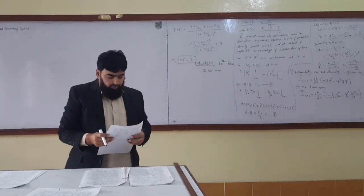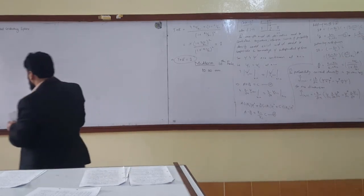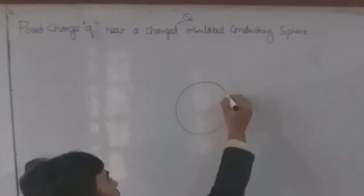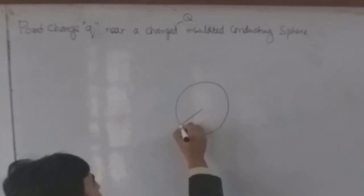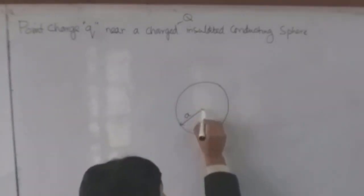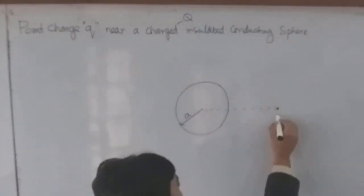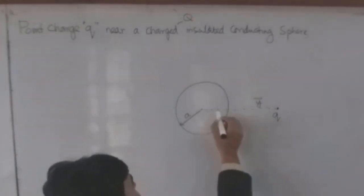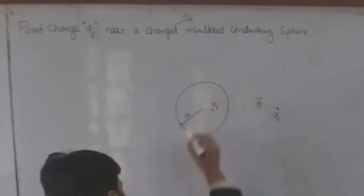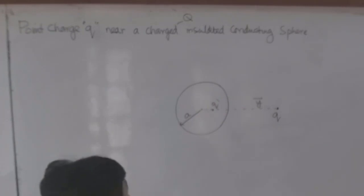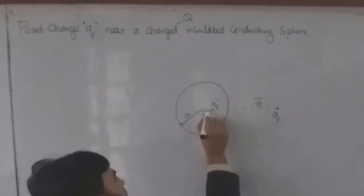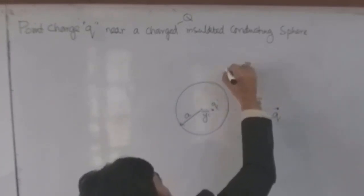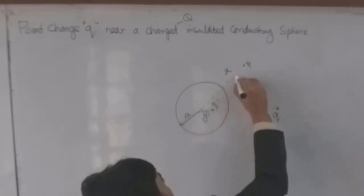We will set up the geometry the same way as before: a sphere of radius A, a source charge Q at distance Y from the center, which induces an image charge Q' at distance Y' from the center, and we observe a point P at distance X from the center of the sphere.